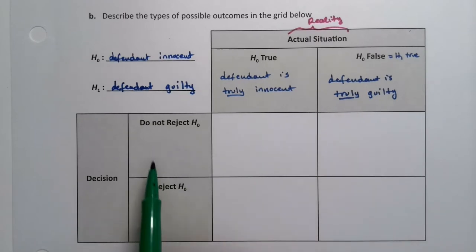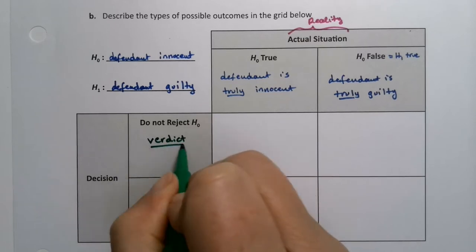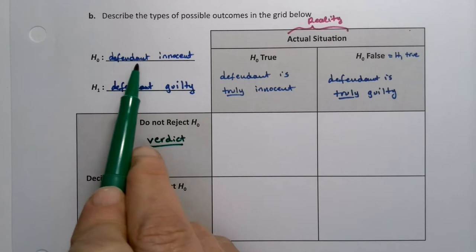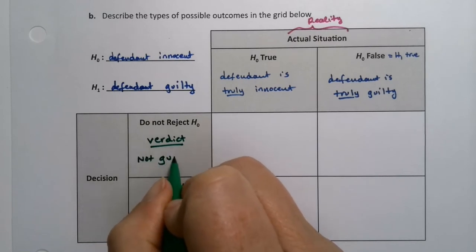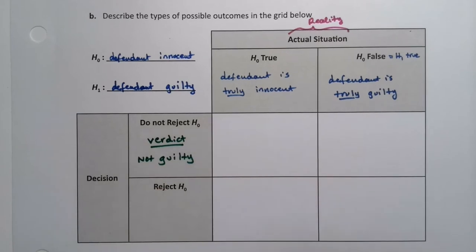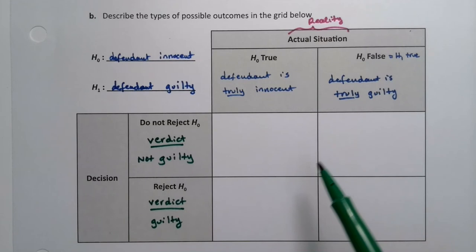Now, what about your decisions? So if you're on the jury or if you're the judge in this case, then you can have verdicts. So the verdict would be, well, if I do not reject the null hypothesis, if I don't reject this, in the U.S., we do not say innocent. We say not guilty. That's our verdict, which is essentially saying, eh, I still think you did it, but I couldn't prove it. Kind of similar to hypothesis testing. So the verdict is not guilty. This one would be that the verdict is guilty.